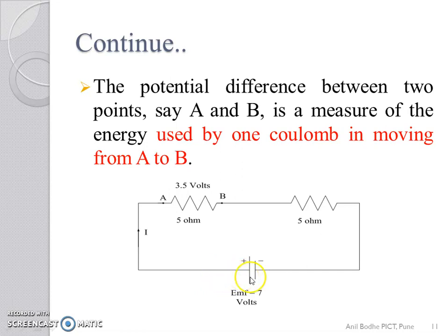And the energy used by one Coulomb in moving from any one point to the other point in the circuit is called the potential difference. So, it is clear that there is a difference between the EMF and potential difference.